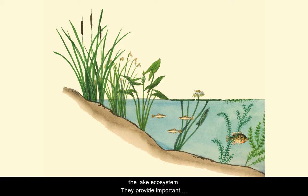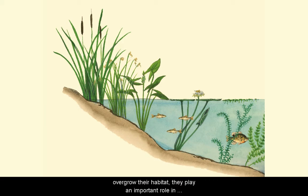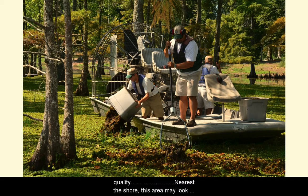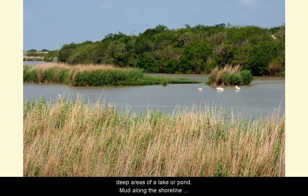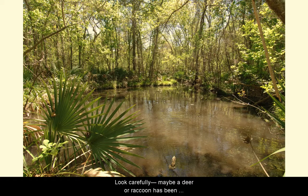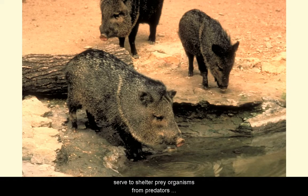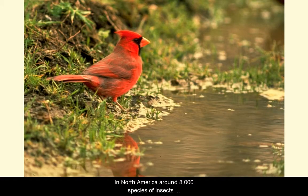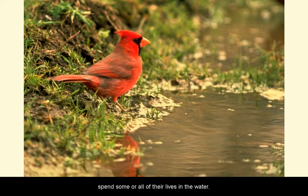The littoral zone is like a narrow band or strip reaching out from the shoreline and islands. These bands of plants hold the greatest variety of life, or biodiversity, to be found in the lake ecosystem, and they provide important habitat for many species of fish. While aquatic plants can become a nuisance if they overgrow their habitat, they do play an important role in aquatic ecosystems and help maintain or improve water quality. Nearest the shore, this area may look more like a wetland than a lake — it's a transition area between the dry uplands and the permanently deep areas. The littoral zone's plant beds serve to shelter prey organisms from predators and are a food source for aquatic insects.